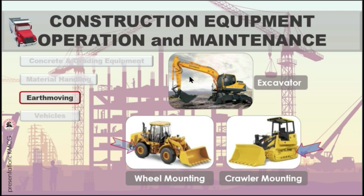The excavator is a form of a backhoe and is hydraulically operated — an excellent digging equipment. It is a heavy construction equipment consisting of a boom, a bucket, and a cab on a rotating platform known as the house. There are two types of mounting: crawler mounting, which is suited for crawling over relatively rugged surfaces at a job site, and wheel mounting. Wheel mounted excavators provide greater mobility between job sites but require better surfaces for their operation.